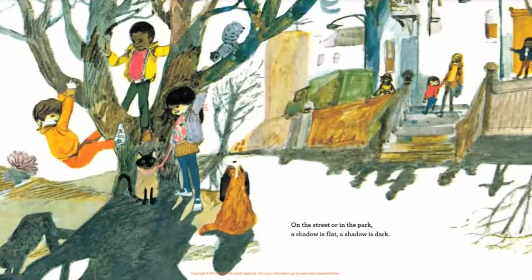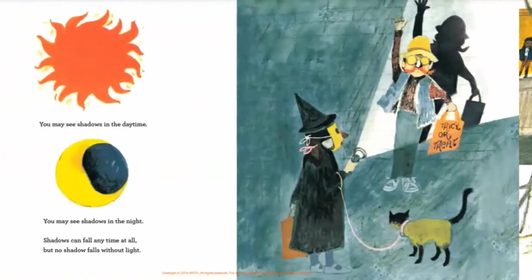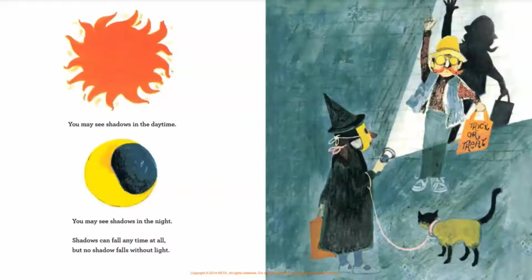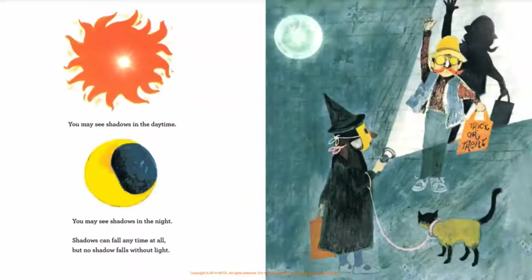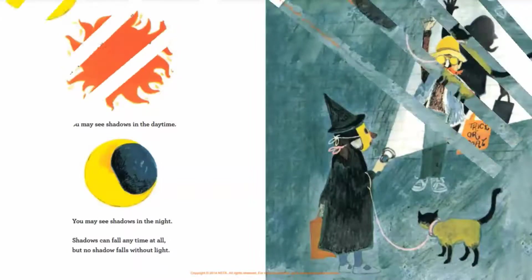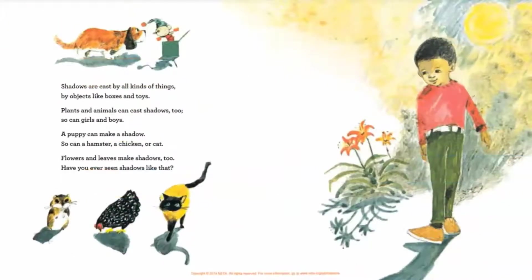On the street or in the park, a shadow is flat, a shadow is dark. You may see shadows in the daytime, you may see shadows in the night. Shadows can fall any time at all, but no shadow falls without light.